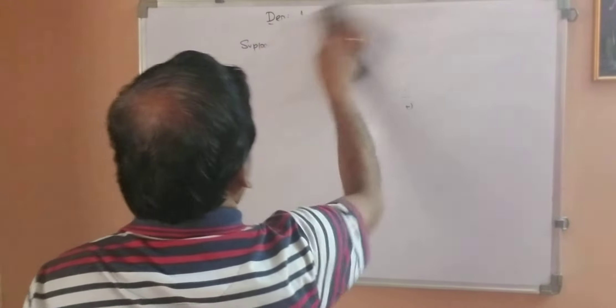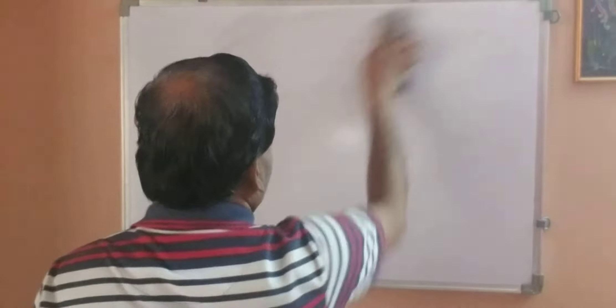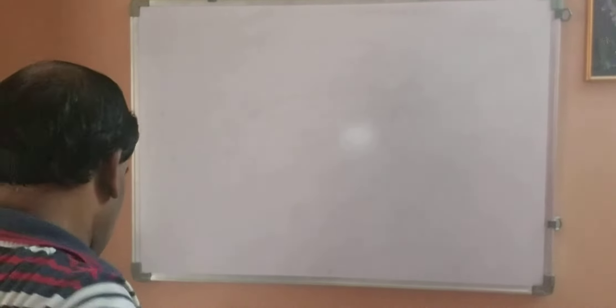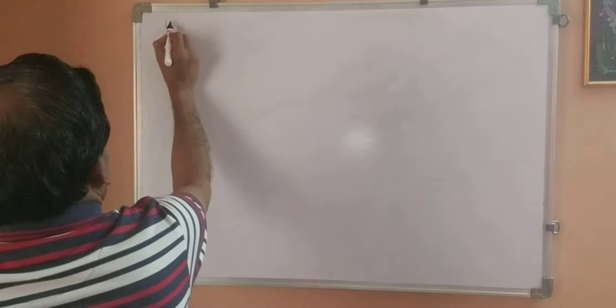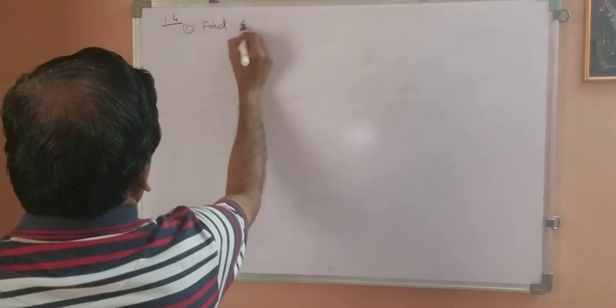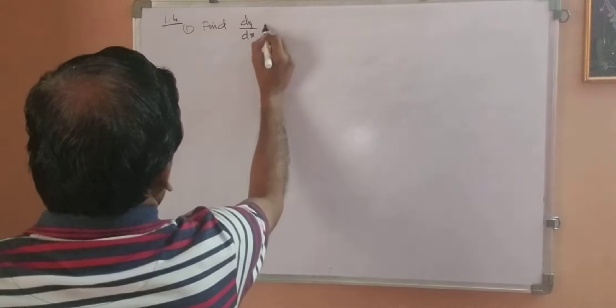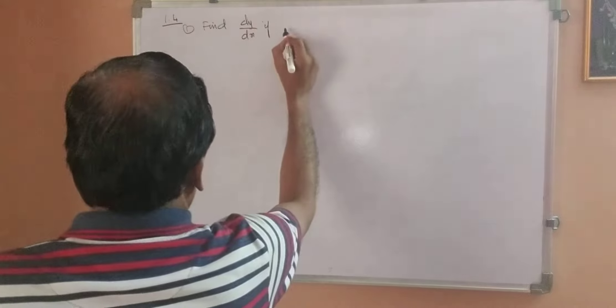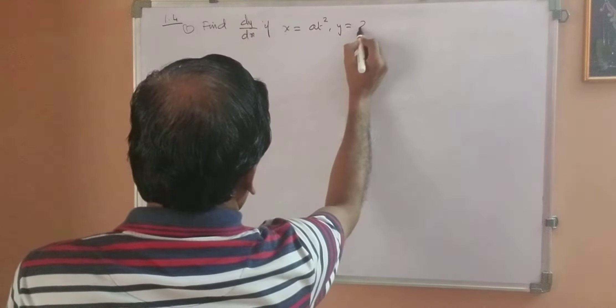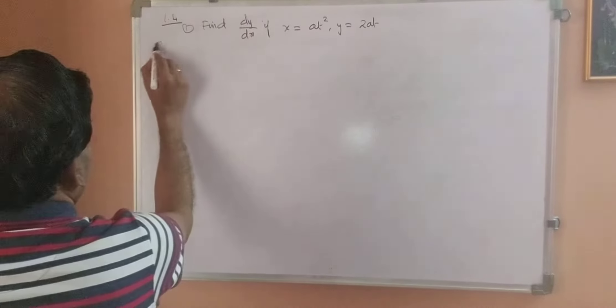Now we will do the problems and you will understand. This is called parametric functions. So now we will do exercise 1.4. First: find dy by dx if x equals at squared and y equals 2at. Now this is very simple — x is a function of t, y is also a function of t, so this is a parametric function.